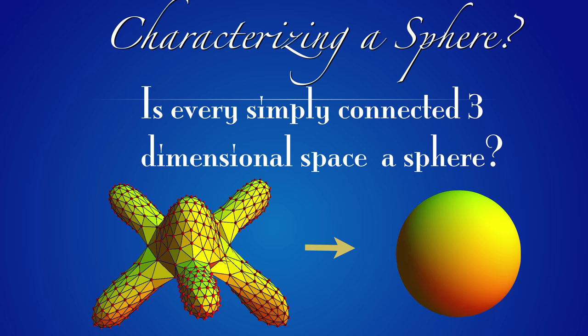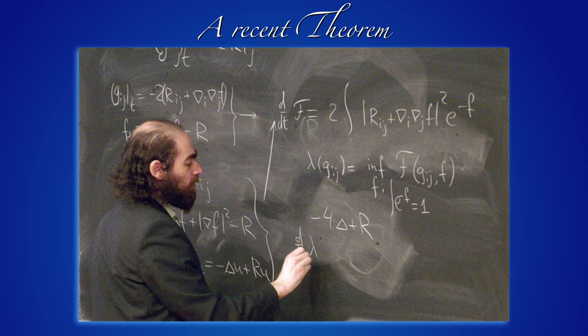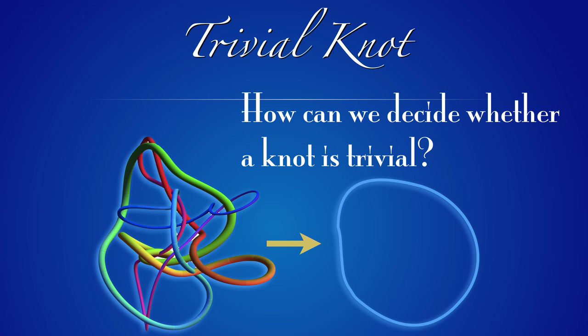Is it true that every simply connected three-dimensional space is a sphere? This question was asked by Henri Poincaré — it was called the Poincaré conjecture. The answer is now known to be yes, and it's a theorem. It has been proven by Gregory Perelman. Is it easy to decide whether two knots are equivalent? Is it easy to describe whether a knot is trivial? Such questions are still very much under investigation. One knows, for example, that there is no machine which can decide, in general, whether two knots are equivalent or not. We will come to the limits of computability later.